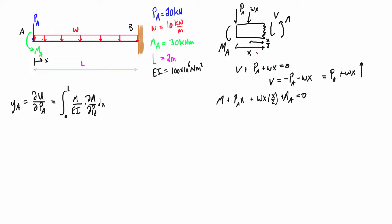And these are all going in the same sense, they're all giving us a counterclockwise rotation basically. So what we do is we just isolate for m, the internal moment, and we're going to bring all the stuff over to the other side, so we get negative Pax minus one half wx squared minus mA.